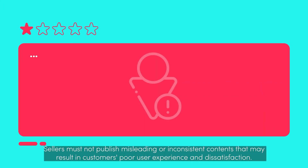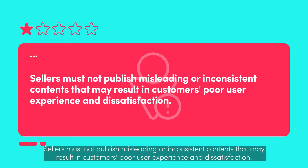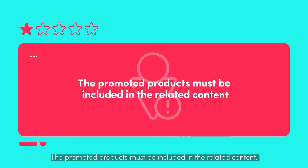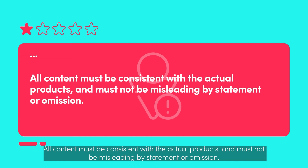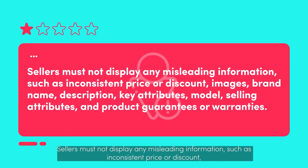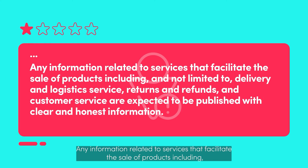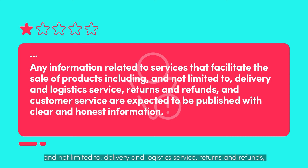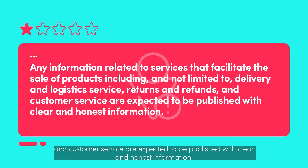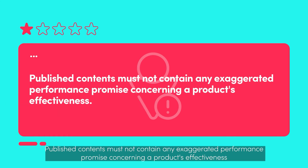Number 4: Misleading content. Sellers must not publish misleading or inconsistent content that may result in poor customer experience and dissatisfaction. The promoted products must be included in the related content. All content must be consistent with the actual products and must not be misleading by statement or omission. Sellers must not display misleading information such as inconsistent price or discount, images, brand name, description, key attributes, model, selling attributes, or product guarantees or warranties. Any information related to services that facilitate the sale of products — including delivery and logistics, returns and refunds, and customer service — must be published with clear and honest information. Published content must not contain any exaggerated performance promise concerning a product's effectiveness.